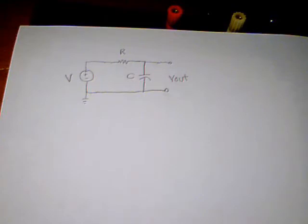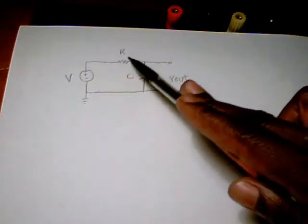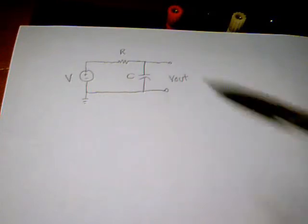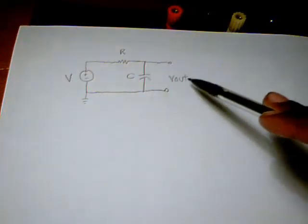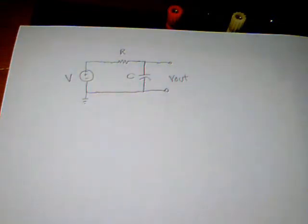As you can see in this RC network circuit, we have a voltage source here, resistor here, capacitor here. And we'll be checking the voltage that's dropped across our capacitor, indicated here by V output.